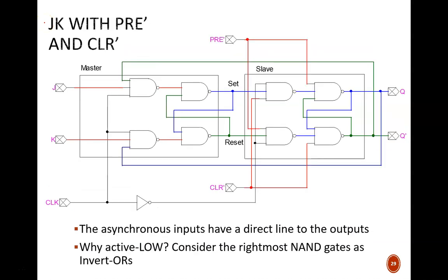The last function I want to show you is asynchronous inputs. Here we see another negative edge-triggered JK flip-flop, but now with preset and clear. Notice that these inputs have a direct line to the output. Their operation might be easiest to see when we think of these NAND gates as invert-ORs.